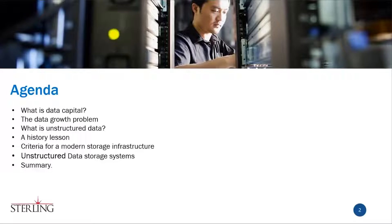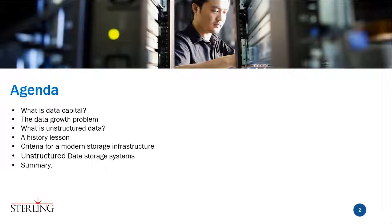Let's go to the agenda. First we're going to talk about data capital, then the data growth problem. We'll talk about the definition of unstructured data, then a history lesson on the evolution of storage systems for unstructured data. That leads into the criteria for a modern storage infrastructure, then a couple of unstructured data system options, and finally a summary with questions at a couple of points.